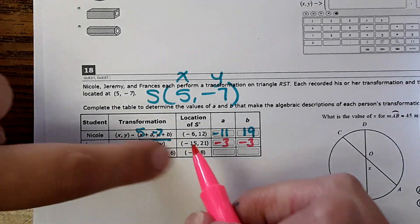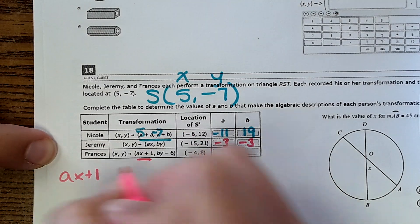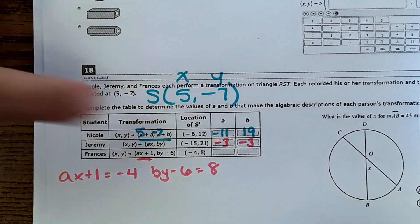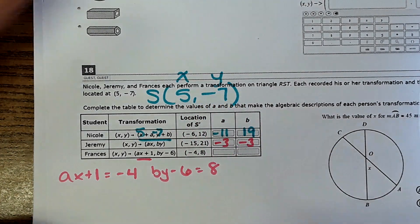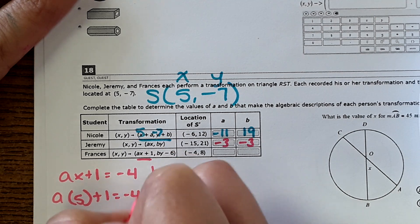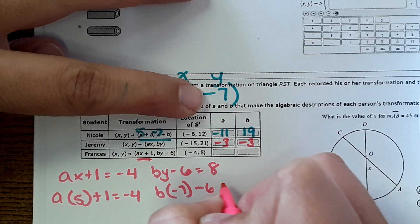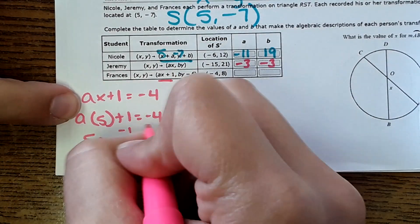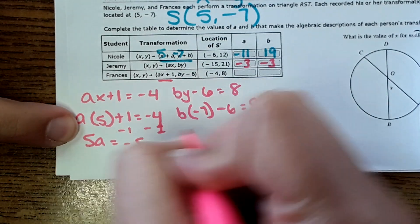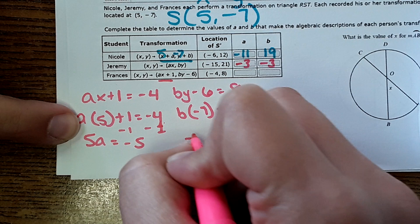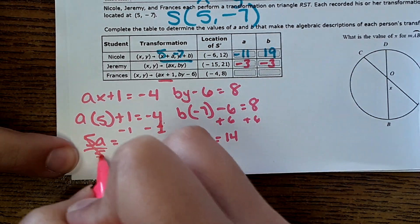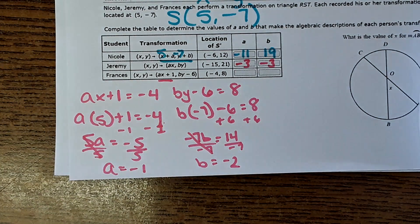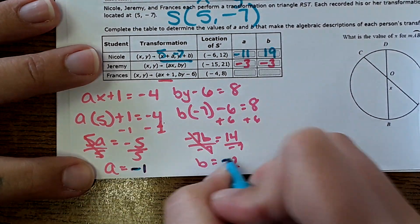The next one is trickier because there are more steps. You have AX plus 1 equals negative 4, and BY minus 6 equals 8. Your X and Y are 5 and negative 7, so: A times 5 plus 1 equals negative 4, and B times negative 7 minus 6 equals 8. Solving these gives A equals negative 1 and B equals negative 2.